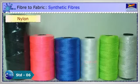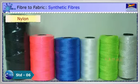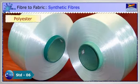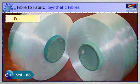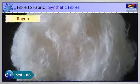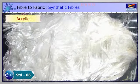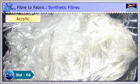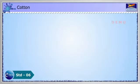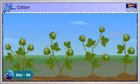Nylon, polyester, rayon and acrylic are synthetic fibres. Now, let us understand as to how the cotton fabric is produced.